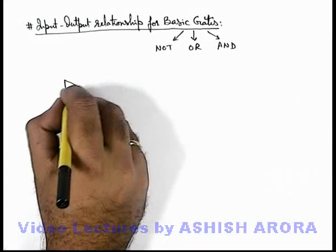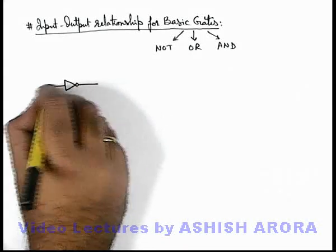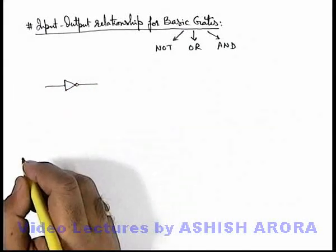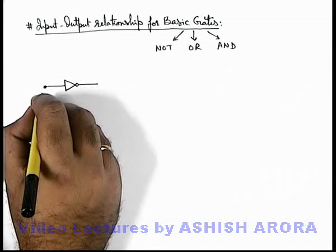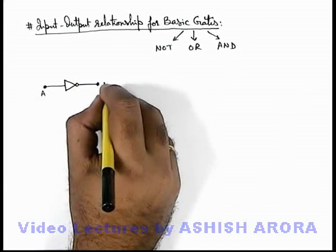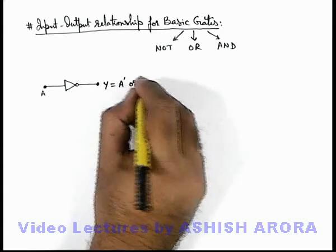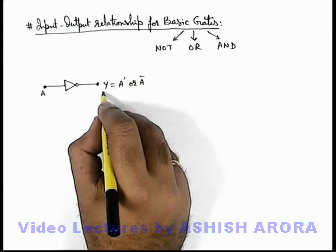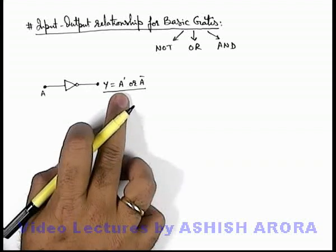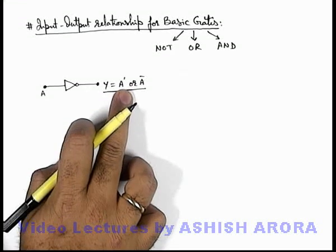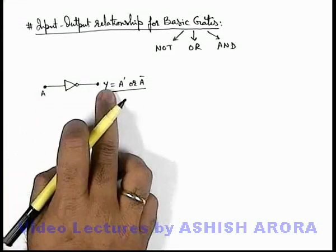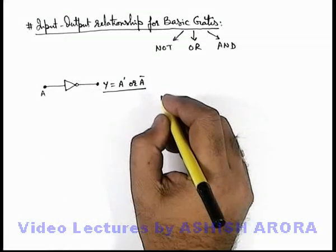In case of NOT gate, we represent it by a symbol of a triangle with a bubble. And here if the input applied is A, the output Y can be written as A prime or A bar. This is the symbolic representation of the output inversion, which is input inversion taken as an output. This is for NOT gate.